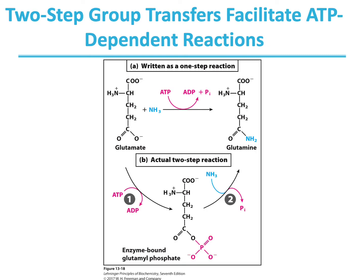The ATP hydrolysis reactions we just saw are not simple hydrolysis. In these cases, ATP doesn't just get hydrolyzed by water to ADP and Pi. What actually happens is ATP is involved in group transfer reactions. For example, glutamate is converted to glutamine in the presence of an enzyme, where ammonia is used and the oxygen is replaced by NH2. To facilitate this reaction, coupling of ATP hydrolysis to ADP drives the reaction forward.